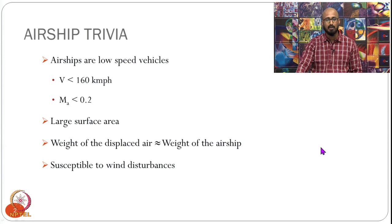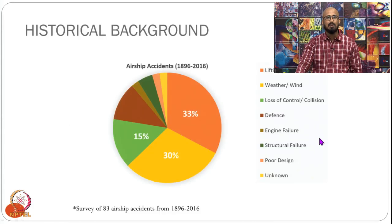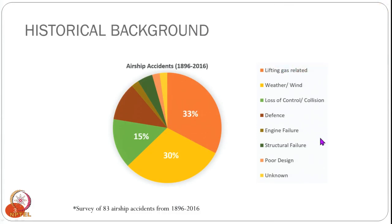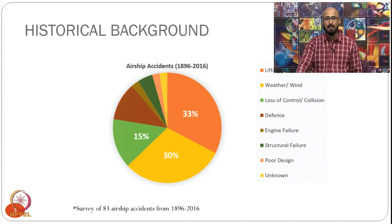Let us look at some historical background regarding all the airship disasters and accidents that have happened from 1896 to 2016. The major chunk is related to lifting gas — that is 33 percent. Most of those accidents happened before the 1950s because after that there were several restrictions on the lifting gas being used and safety precautions were taken even when hydrogen was used.